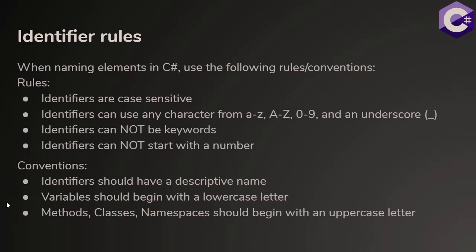Now those are the rules. There are also some conventions we should follow when we name things in our program. In C#, identifiers should have descriptive names. So try to avoid using names like X, Y, Z, when instead you can use names like age, name, salary, and so on. Variables should begin with a lowercase letter. This is a convention in C#. And then methods, classes, and namespaces, when we name these objects, these should begin with an uppercase letter.